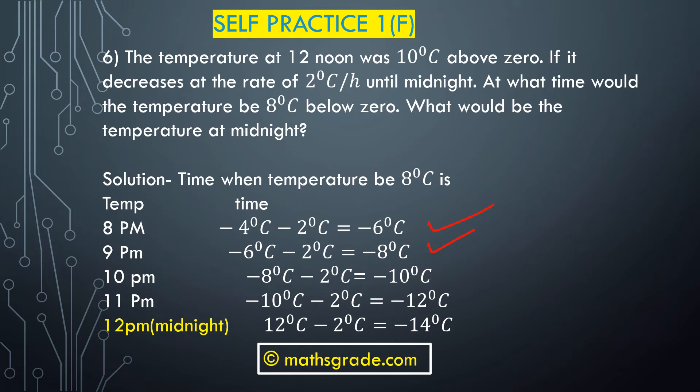Continuing to find the midnight temperature: at 10 PM it is minus 8 minus 2 equals minus 10 degrees Celsius. At 11 PM: minus 10 minus 2 equals minus 12 degrees Celsius. And at 12 PM midnight: minus 12 minus 2 equals minus 14 degrees Celsius.